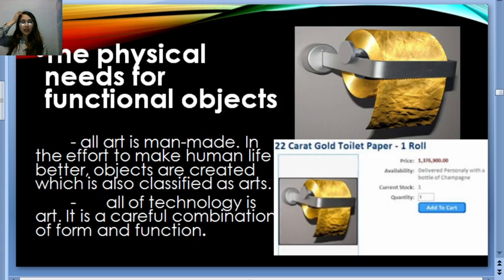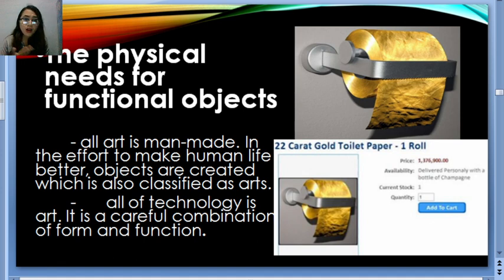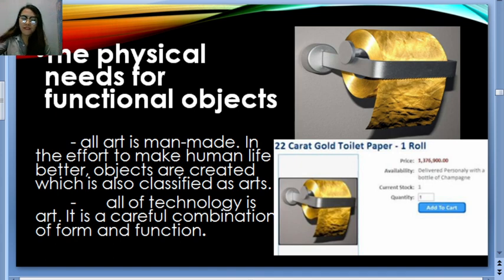Another function of art is the physical need for functional objects. Almost everything that is created has its own function. All art is man-made in the effort to make human life better — objects are created which are also classified as art, and all of technology is art. It is a careful combination of form and function. Even in design, there's always a reason behind why something looks a certain way. I have here an example: a 22-carat gold toilet paper.